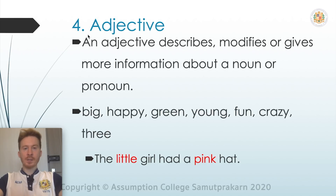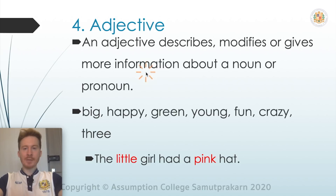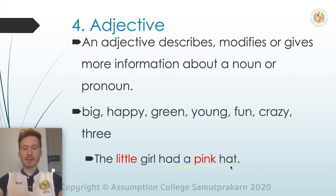The next part of speech we're going to look at are adjectives. An adjective describes, modifies, or gives more information about a noun or a pronoun — so they are describing words. For example: big, happy, green, young, fun, crazy, and three. Let's read this sentence: 'The little girl had a pink hat.' Little and pink are the adjectives — little describes the girl, and pink describes the hat.